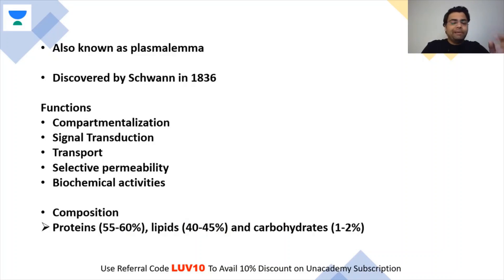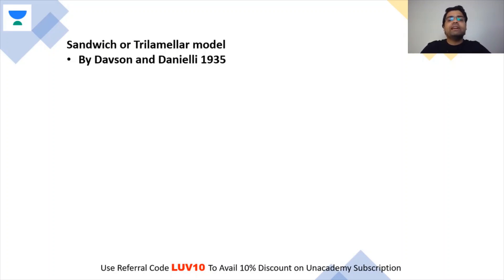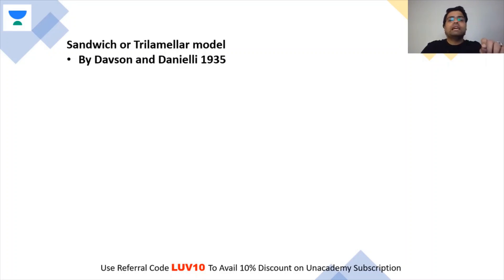The composition of the plasma membrane is basically made of proteins and lipids. Now we will see the structural models, which are very important from the exam point of view. The first model was the sandwich or tri-lamellar model, given by Davson and Danielli in 1935. Importantly, in 1935 the electron microscope had not yet been invented — it was invented in 1950 by Knoll and Ruska.